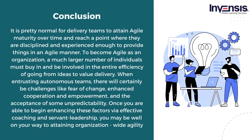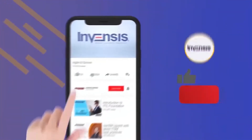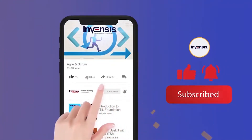To conclude, it is normal for delivery teams to attain agile maturity over time and reach a point where they are disciplined and experienced enough to deliver things in an agile manner. To become agile as an organization, a much larger number of individuals must buy in and be involved in the entire efficiency of going from ideas to value delivery. Once you begin enhancing these factors via effective coaching and servant leadership, you may be well on your way to attaining organization-wide agility.